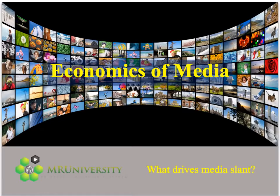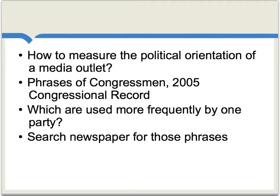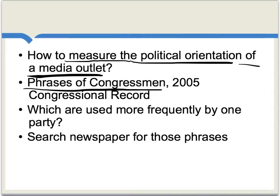To the extent there is political bias or slant in the media, what drives that? We're going to look at some results from a very good paper by Matt Genskow and Jesse Shapiro, available online. One of the breakthroughs in this paper is that the authors have come up with a way to measure the political orientation of a media outlet.